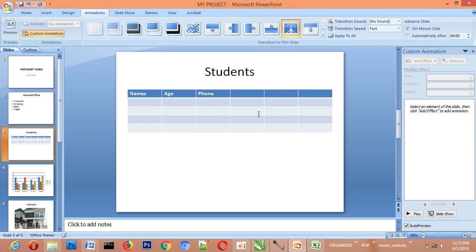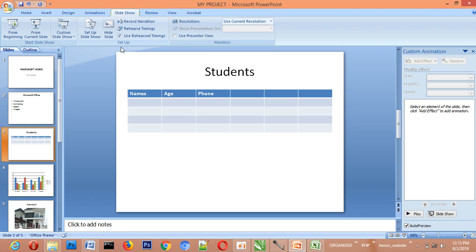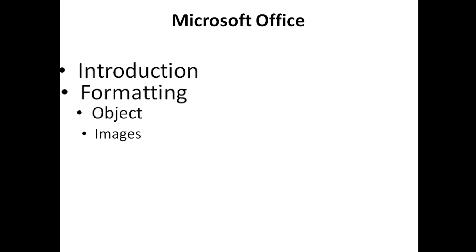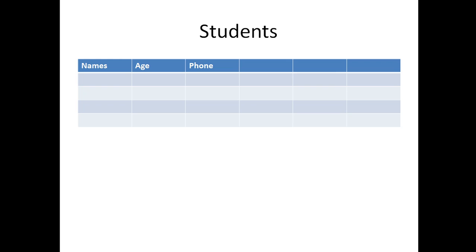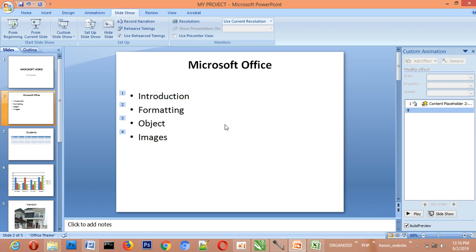Finally, to review and present your slideshow, go to Slideshow and click 'Start from Beginning.' The presentation will now display for your audience. Click to advance through each slide, explaining what you want to explain as you go. You can also time the animations so the slides advance automatically without clicking. Thank you so much — I believe this can help you.